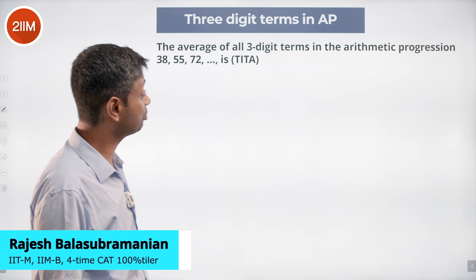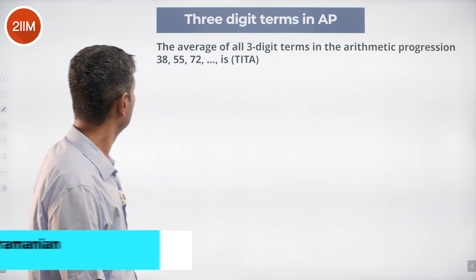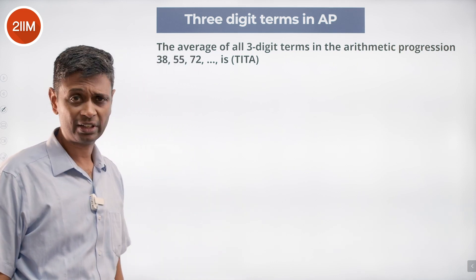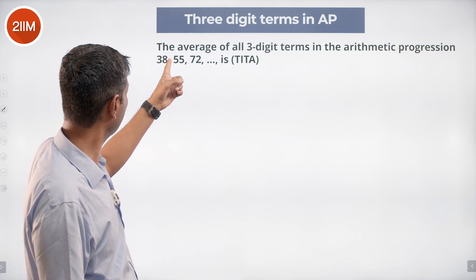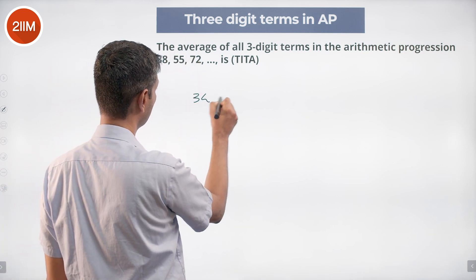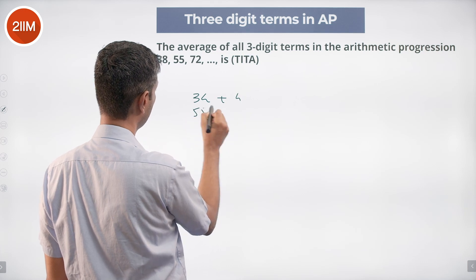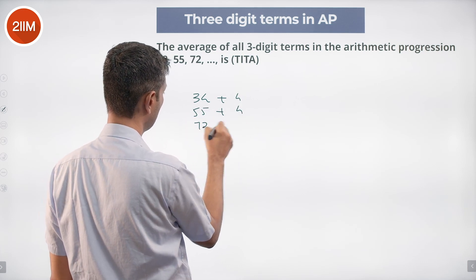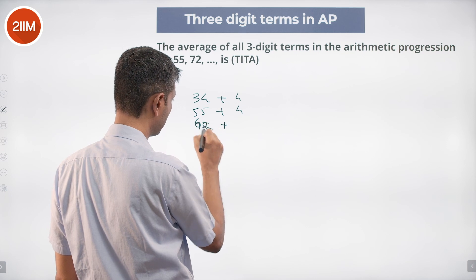The average of all three-digit terms in the arithmetic progression 38, 55, 72, etc. The pattern is plus 17, plus 17, plus 17. I'm going to call this as 34 plus 4, 55 plus 4, 72 plus - sorry, 68 plus 4.